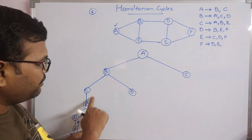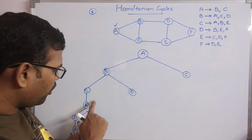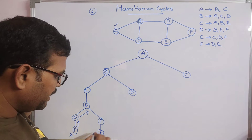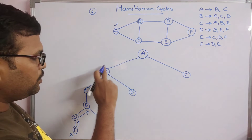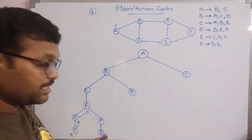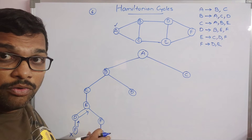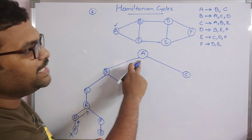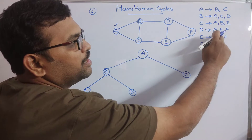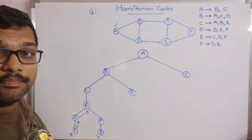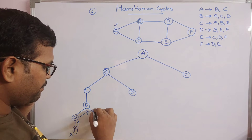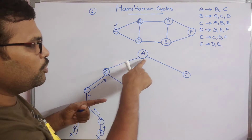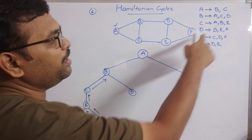With the alternate path from F: F has edges to D and E. E is already visited, but D is not visited. So we try F to D. In the path A-B-C-E-F-D, all six nodes are visited. Now check whether D has an edge to A — D has no edge to A, so this is also not feasible. Backtrack again.